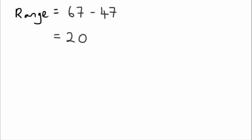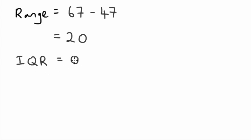Now we want to find the interquartile range (IQR) for grouped data. The IQR equals Q3 minus Q1, so we need to find Q1 and Q3. For grouped data we use a formula to get Q1: LQ1 plus (n over 4 minus capital F) over FQ1, multiplied by c.